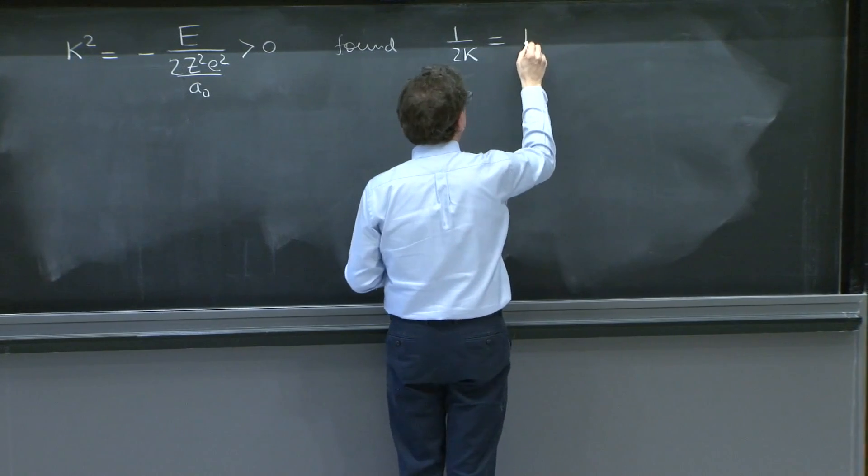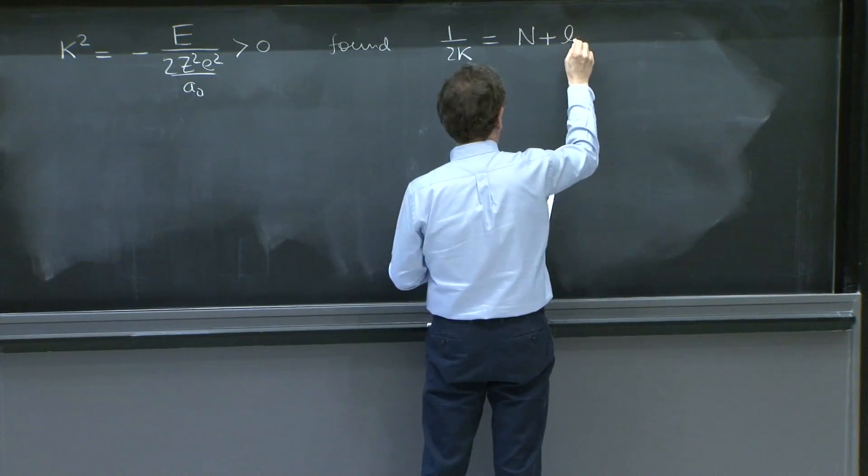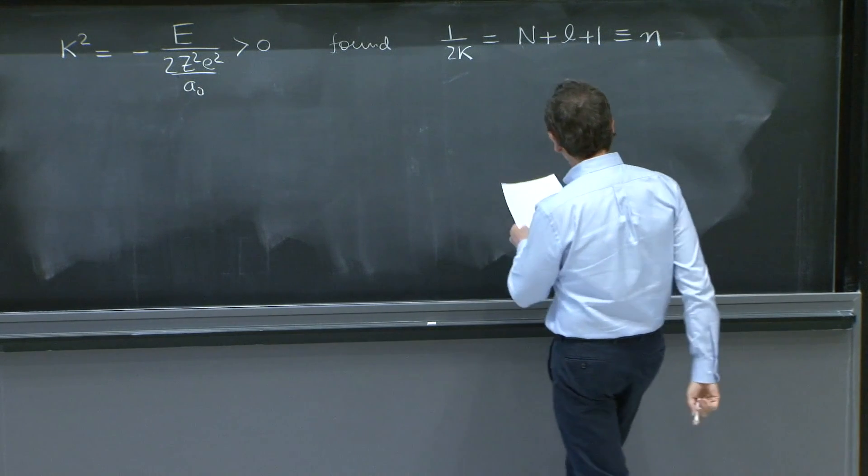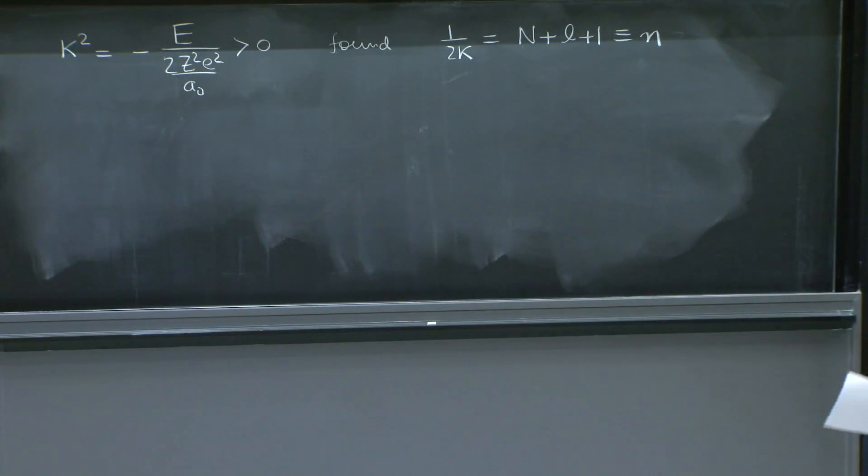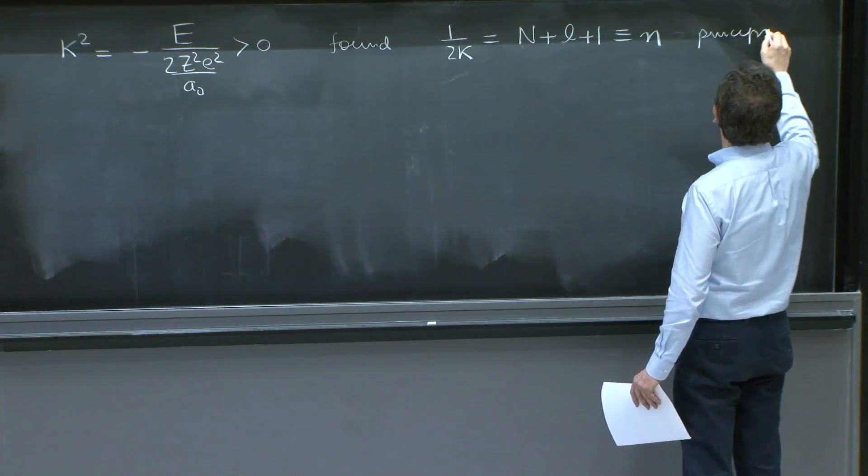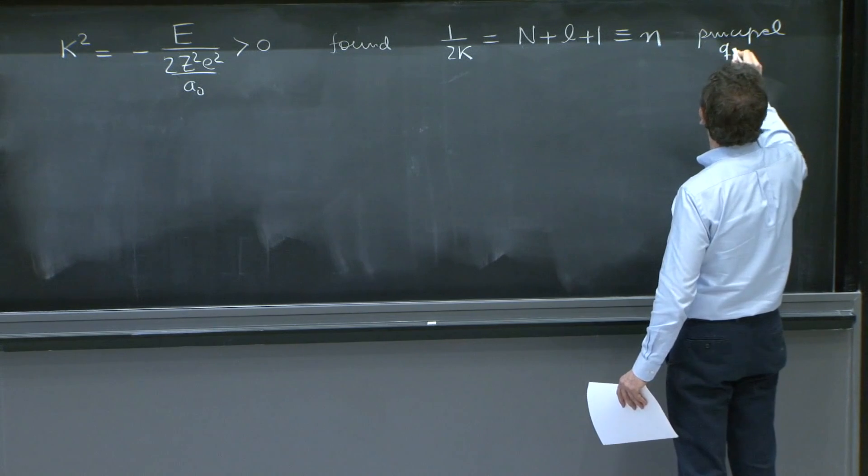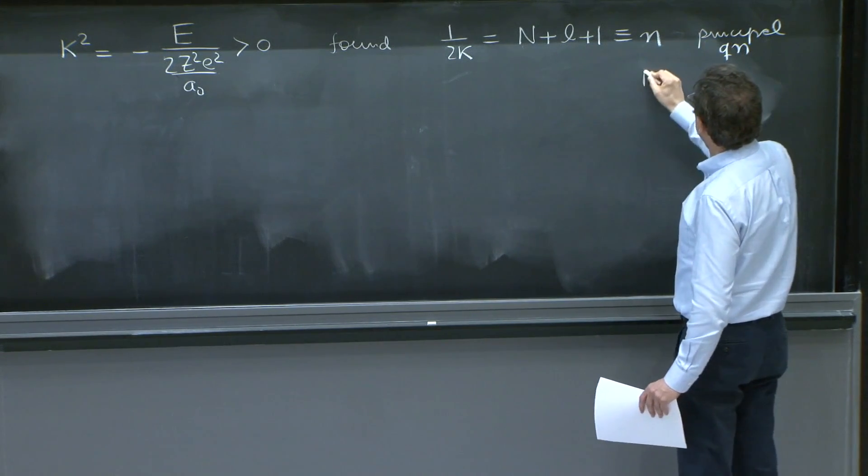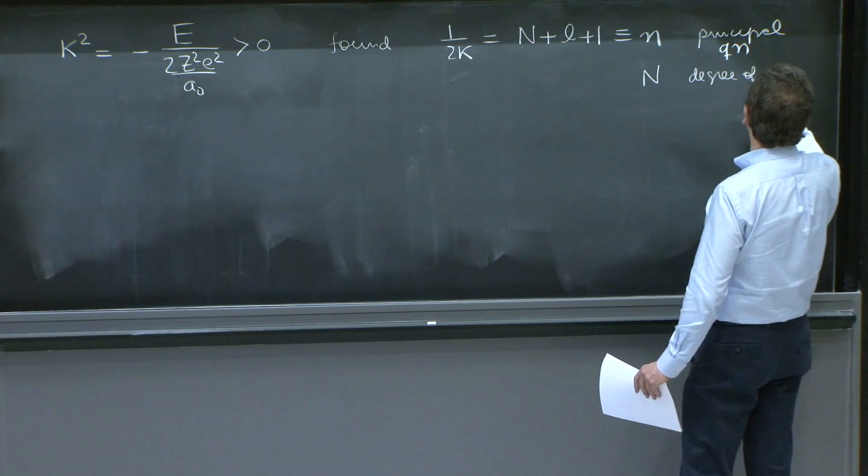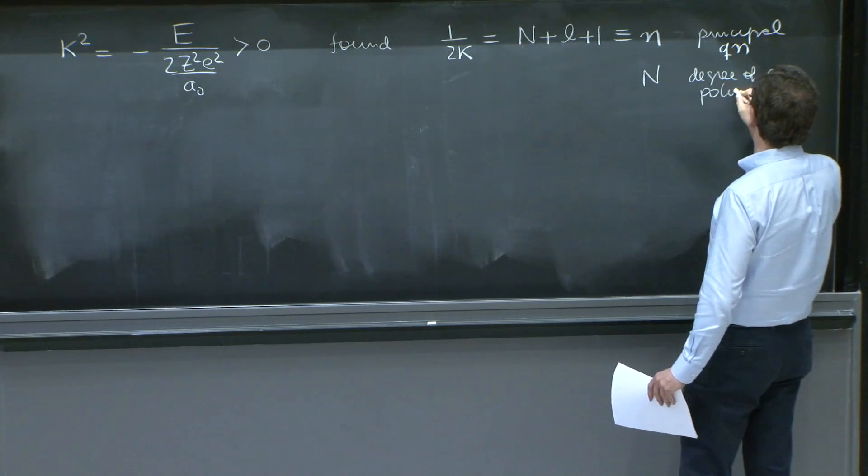1 over 2 kappa was n plus l plus 1, something that we call n. And n was the principal quantum number. So this is the principal quantum number. n was the degree of a polynomial in the solution.